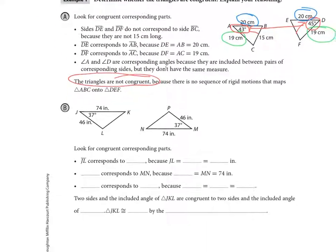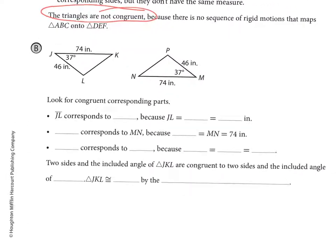So let's look down at B now. I have a side of 46, so those are congruent. I have an angle at 37, and then I have a side at 74 and a side at 74. That gives me the side, angle, side triangle congruence theorem. And so I know that these two triangles are congruent. And that's all there is to side, angle, side.